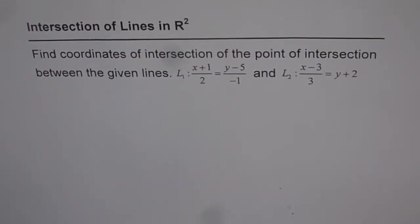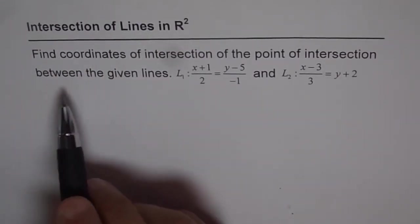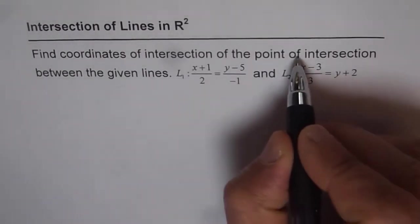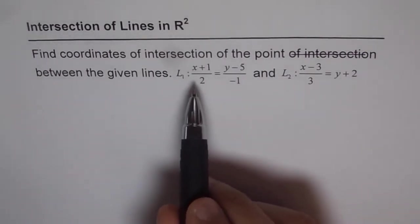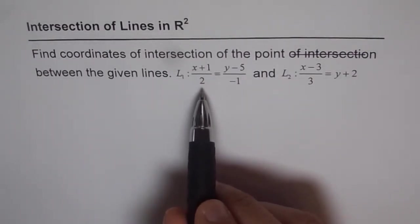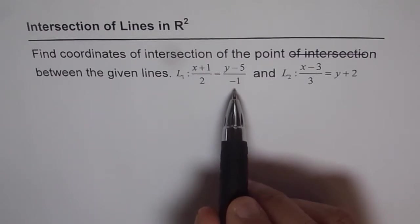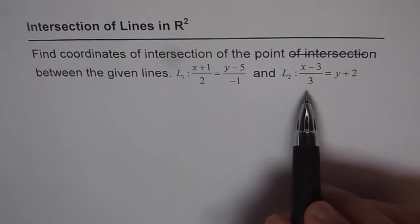Here is the solution for the test problem. It is intersection of lines in R2. Find coordinates of intersection of the point between the given lines: L1, (x+1)/2 = (y-5)/(-1), and L2, (x-3)/3 = y+2.